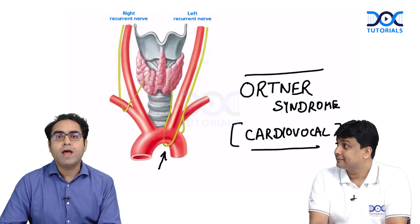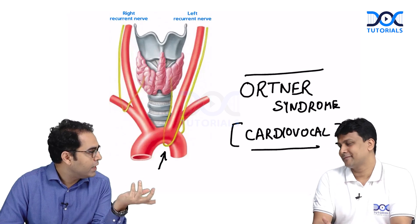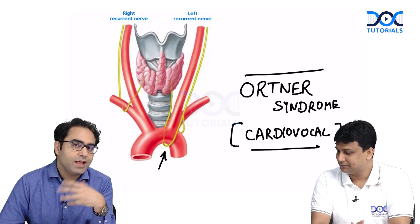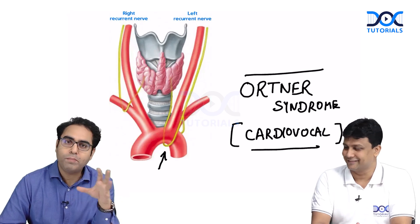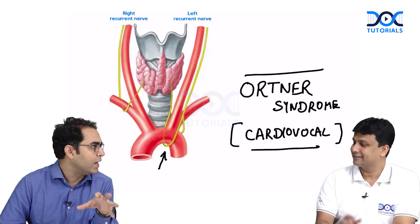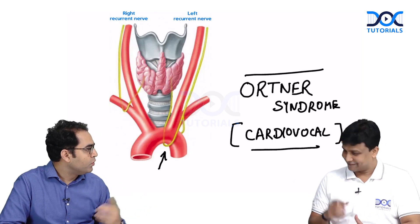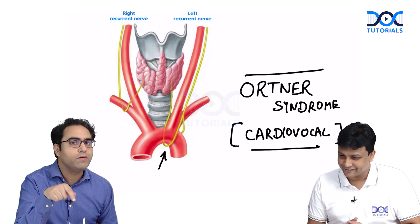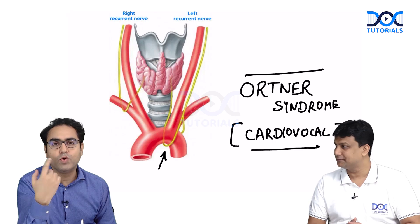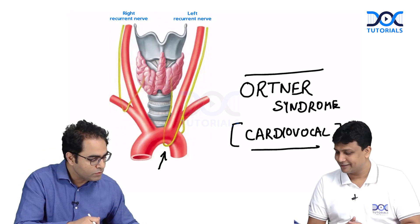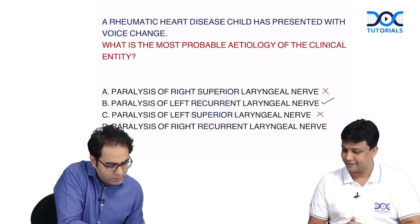You can also interpret another clinical scenario: a patient with aortic aneurysm presenting with vocal cord issues — again it is the left RLN getting paralyzed. Now another question: if a patient is suffering from a Pancoast tumor of the right lung — a tumor of the apex of the right lung — and develops vocal cord paralysis, the right RLN takes a turn around the subclavian artery almost abutting the apex of the right lung, so a right-sided Pancoast tumor presses the right RLN and causes vocal cord paralysis.